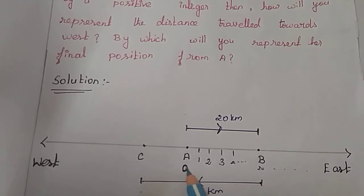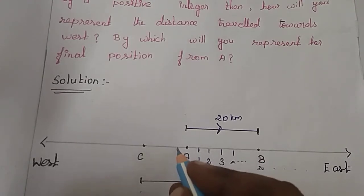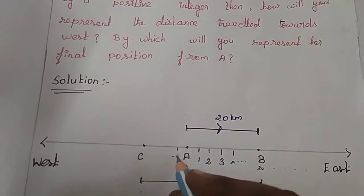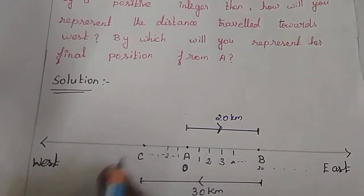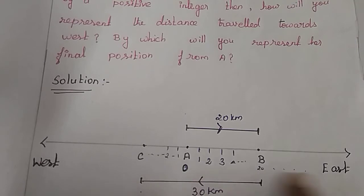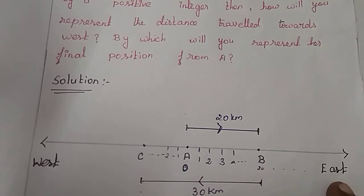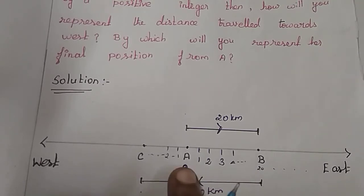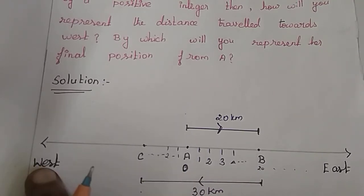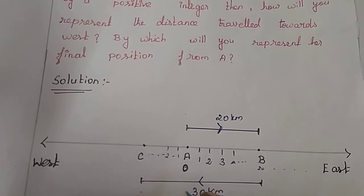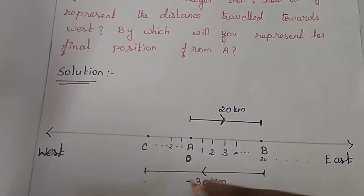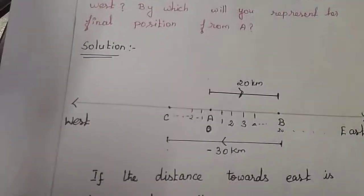The point C is in the opposite direction: 0, minus 1, minus 2, and so on — these are negative integers. So the point C is in the opposite direction, and it represents negative 30 kilometers.